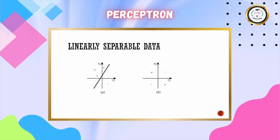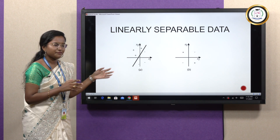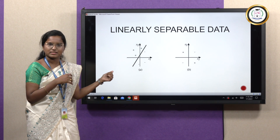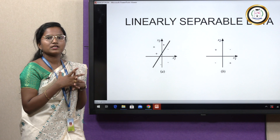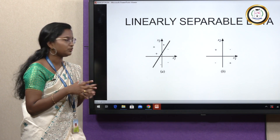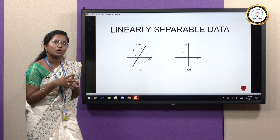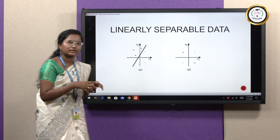Here comes the linearly separable concept. A perceptron works well on linearly separable data. For example, in diagram A, the plus and minus points are given in the graph, and we can separate the plus from minus using a single line — that is linearly separable data. Whereas in diagram B, you cannot separate the minus and plus using a single line — that is called non-linearly separable data. For linearly separable data, we use the perceptron to solve the problem.